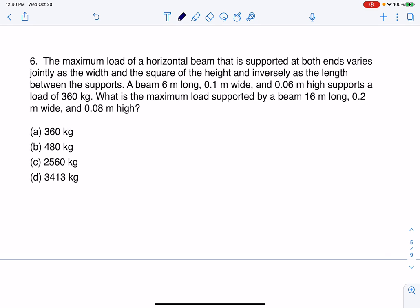All right, let's take a look at number six on our sample exam. The maximum load of a horizontal beam that is supported at both ends varies jointly as the width and the square of the height, and inversely as the length between the supports.